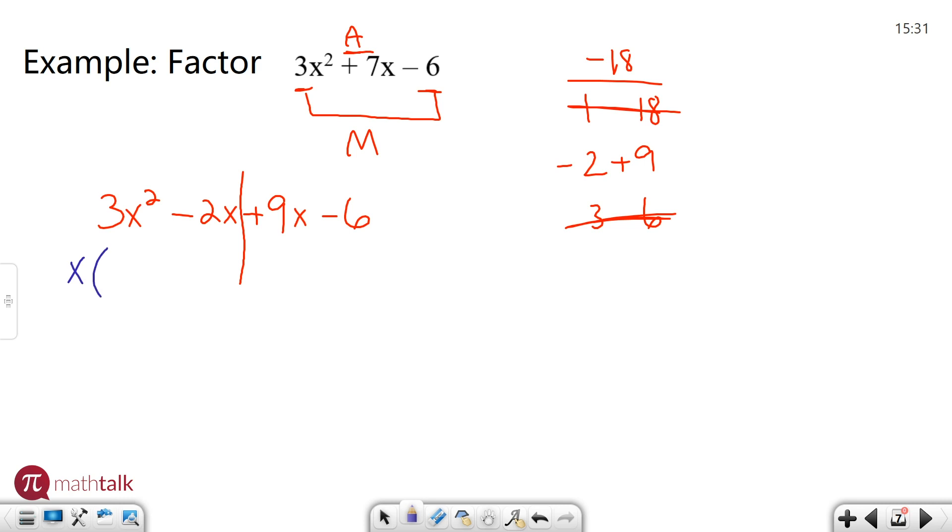So I'm going to factor that out by dividing everything by x. So 3x² divided by x, all I'm really doing is getting rid of one of the x's. So what's left is 3x. If I get rid of the x from negative 2x or divide it out, all I'm left with is negative two.